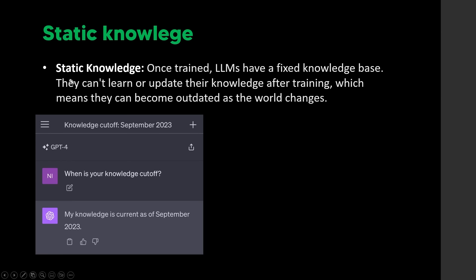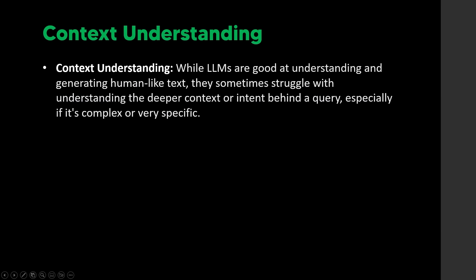Another limitation is static knowledge: once trained, LLMs have a fixed knowledge base and can't learn or update after training, making them outdated as the world changes. For example, a knowledge cutoff of September 2023 means any events after that aren't reflected — and if OpenAI doesn't update it, you're stuck. Static knowledge is a real bottleneck since the world changes every second.